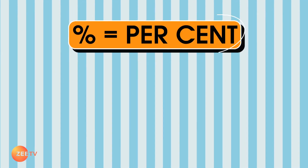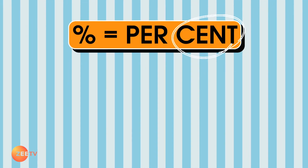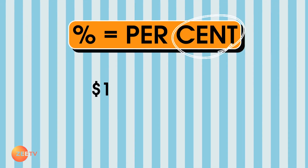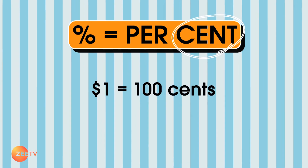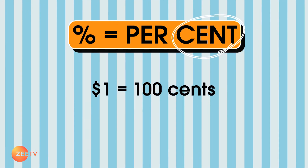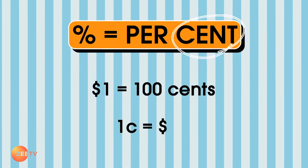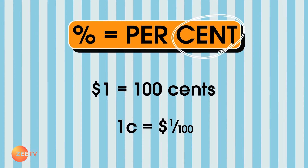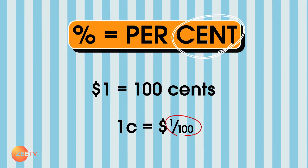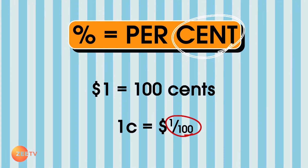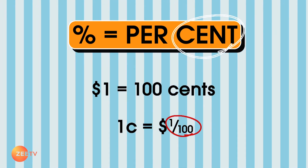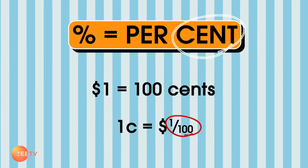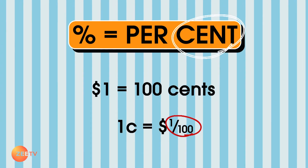Let's start with 'cent.' What is a cent? One dollar is equal to 100 cents. Or you can also say it's 1 out of 100 of a dollar. This keyword is very important: 1 out of 100 — it means 1 part out of 100, or 1 out of 100.